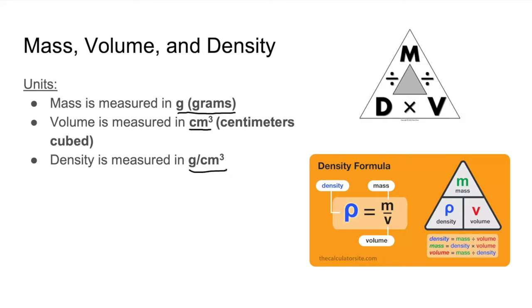So say we have the volume and the mass of an object, and we need to find the density. So to do this, we divide mass by volume.